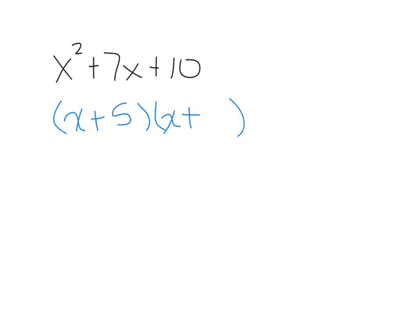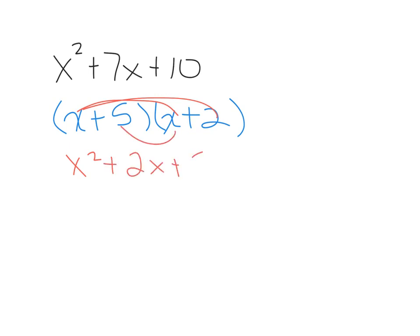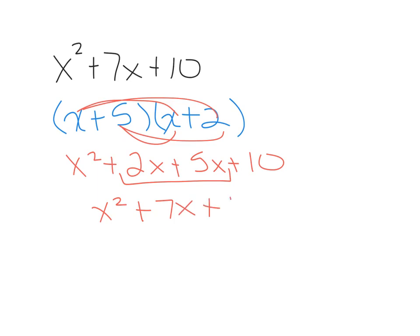The two numbers that multiply to make 10 are 5 times 2, and those add to make 7. We write the biggest one first. You can check this using FOIL: x times x is x², x times 2 is 2x, plus 5x, plus 10. Combining like terms gives x² + 7x + 10. So your factors are (x + 5)(x + 2).